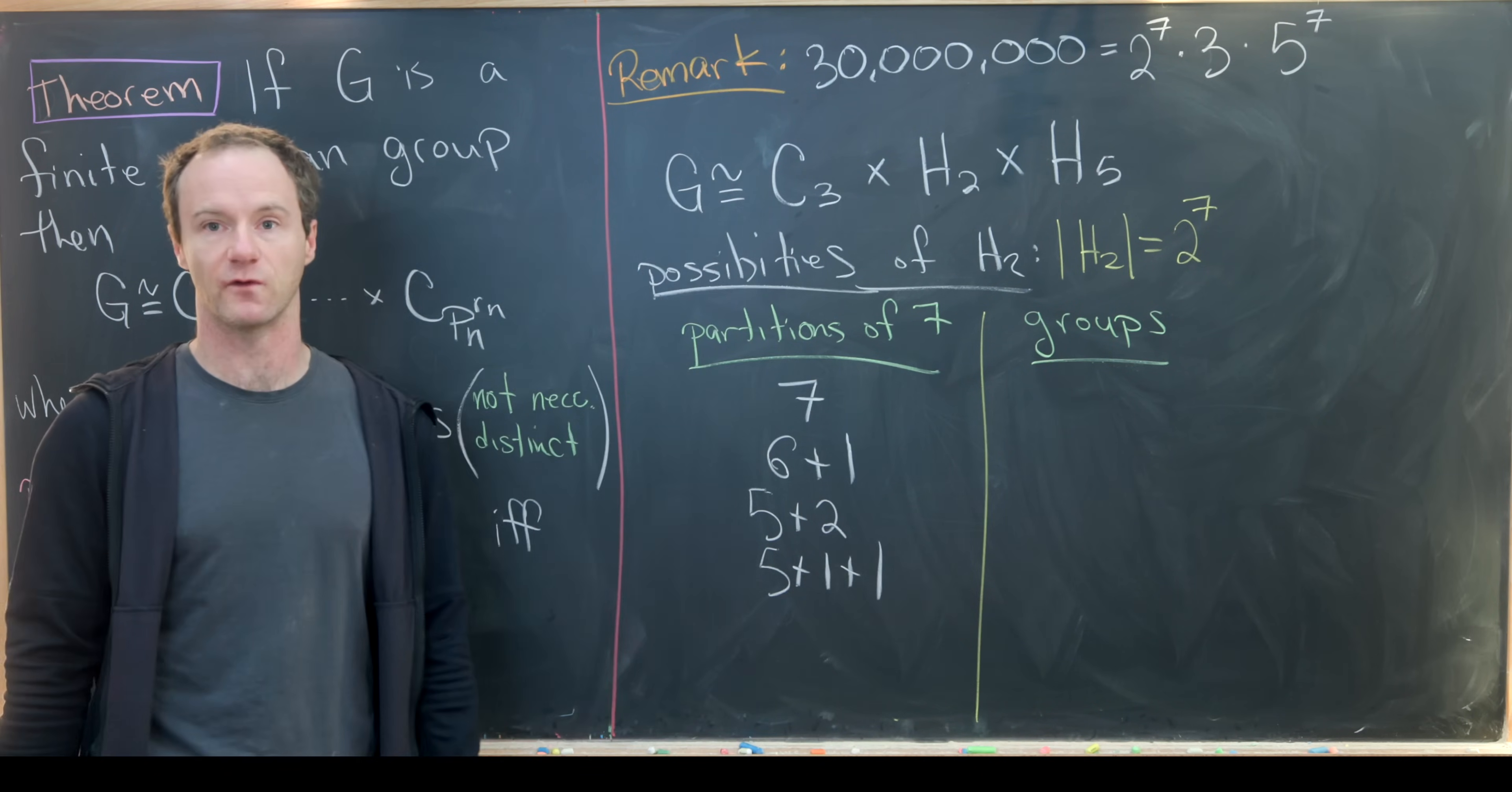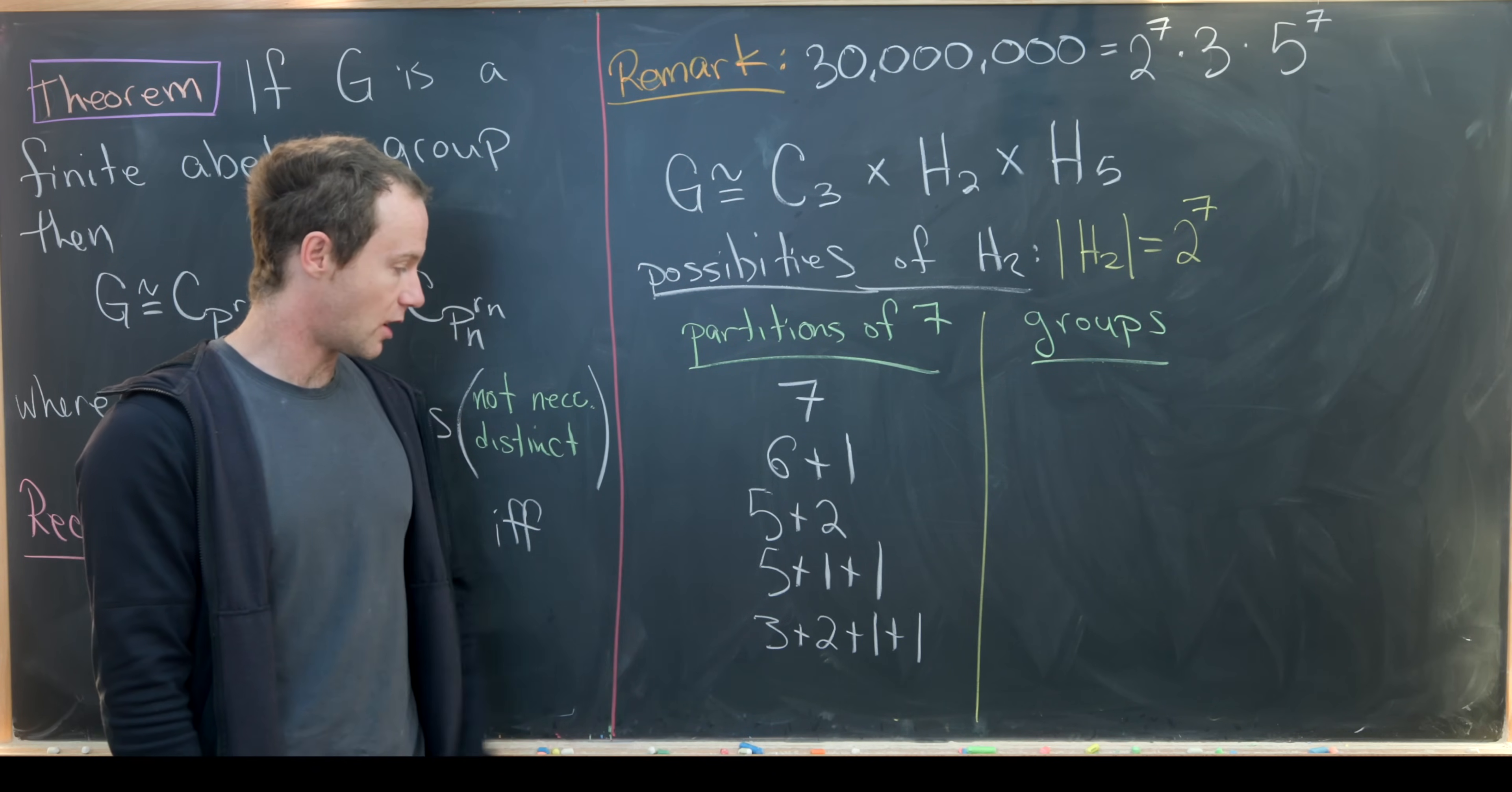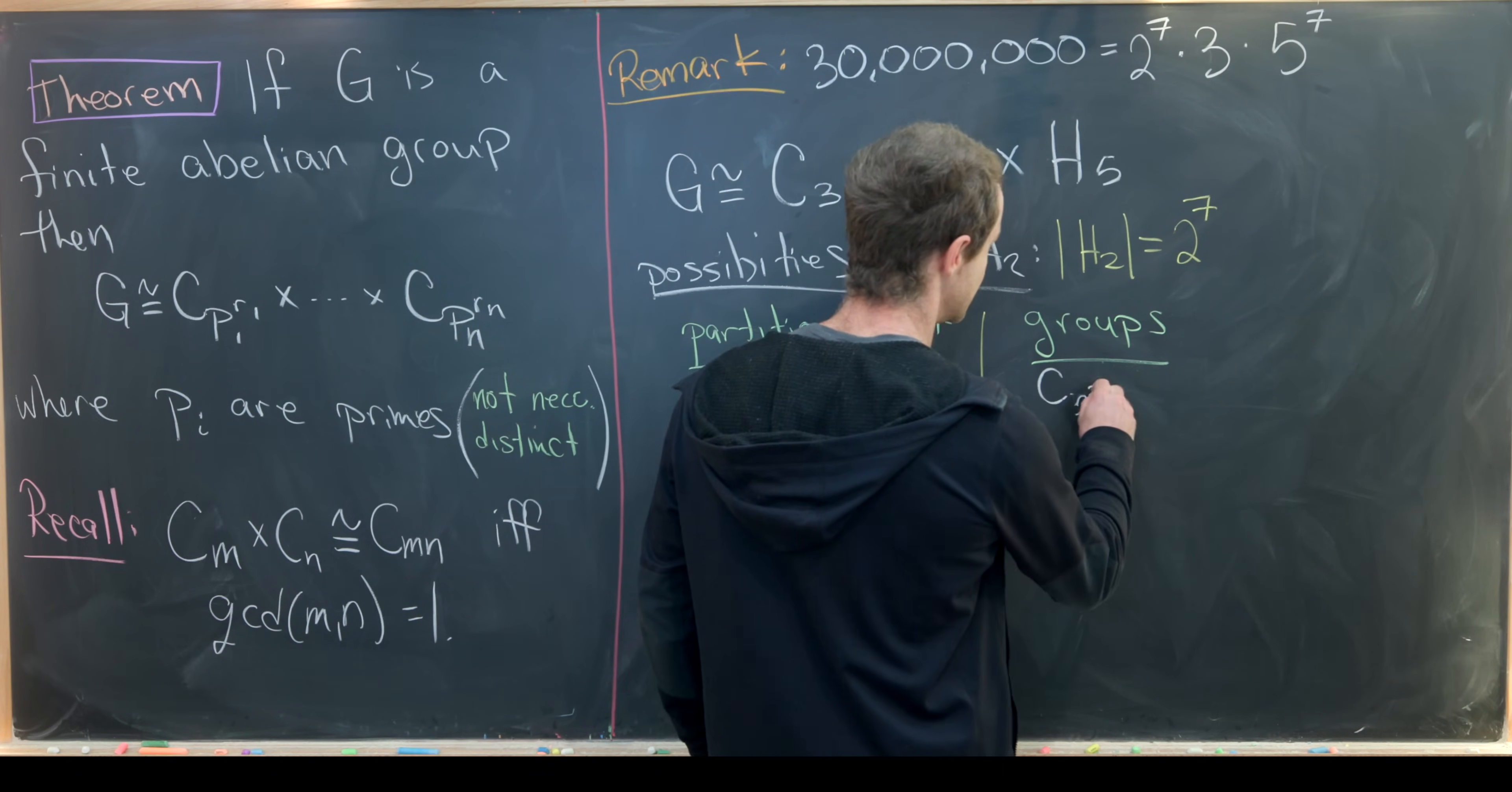Then let's jump down - we have another partition of the form 3 plus 2 plus 1 plus 1. That's another example of a partition of 7. So all in all there are 15. I've given you 5. I'll let you write out the rest. So now what groups can we associate to these partitions? Well to the partition 7 I'll associate C 2 to the 7.